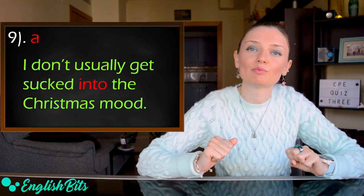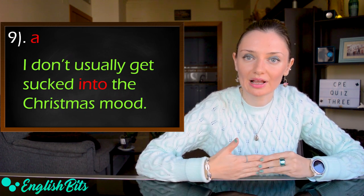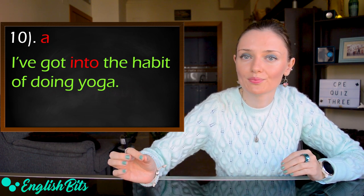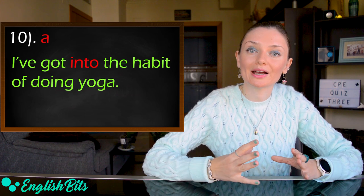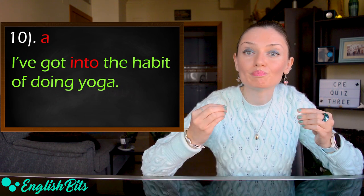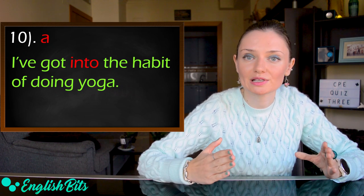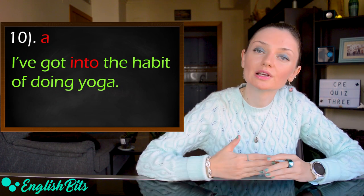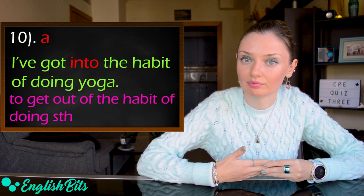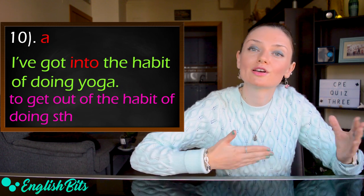And last but not least, number 10. The correct option is A. I've got into the habit of doing yoga. The verb to get into the habit of doing something means to build a habit. And if it's the opposite, to finish a habit, it would be to get out of the habit of doing something. For example, I've got out of the habit of running.